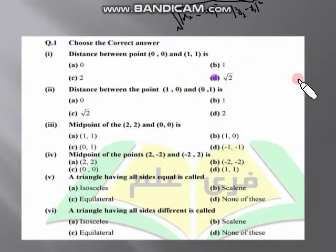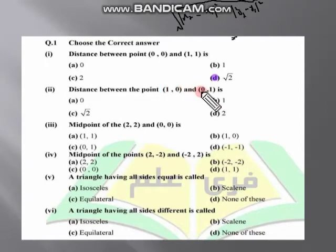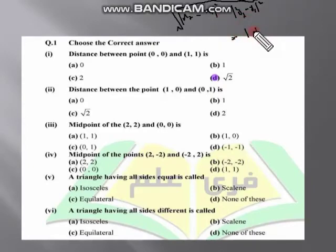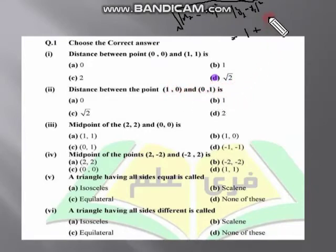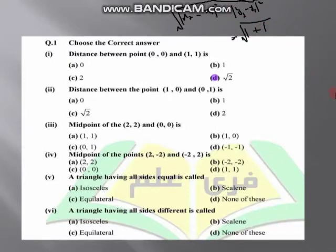اگلا MCQ: پھر distance پوچھا گیا ہے تو اسی formula میں values put کریں گے۔ x1=1, y1=1 اور x2=0, y2=0۔ 0 minus 1 equal to minus 1، minus 1 کا square لیں گے تو plus 1 ہو جائے گا۔ اسی طرح y میں: 0 minus 1 equal to minus 1، square ہے 1۔ 1 plus 1 کا square root لیں گے تو اس کا بھی answer √2 آ جائے گا۔